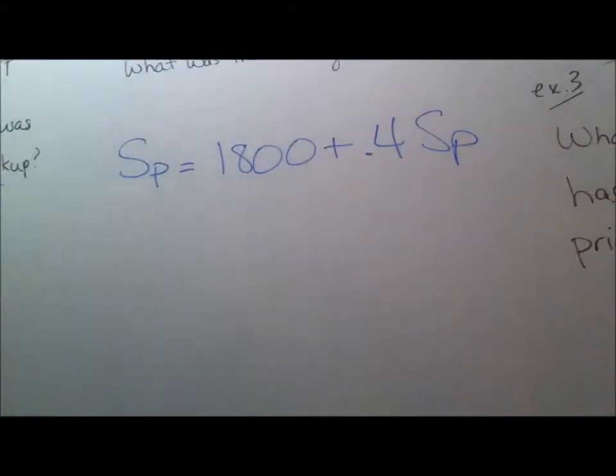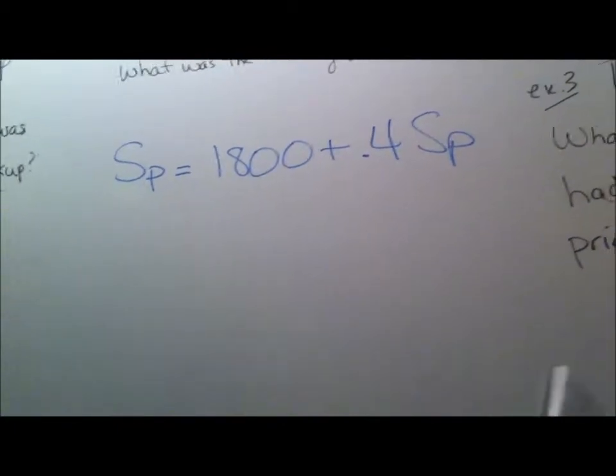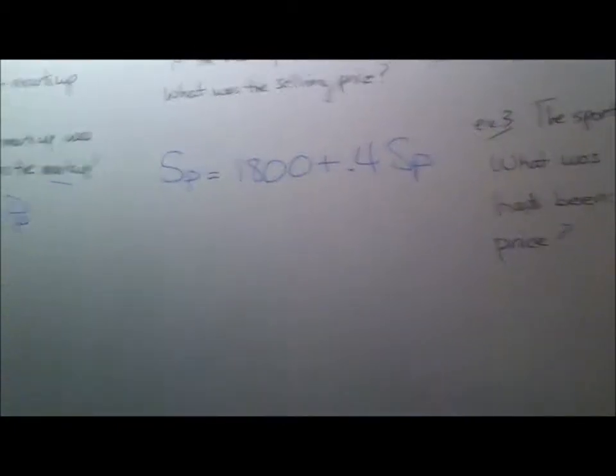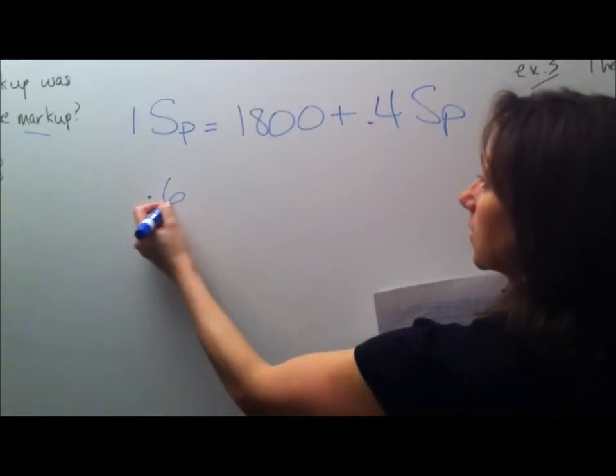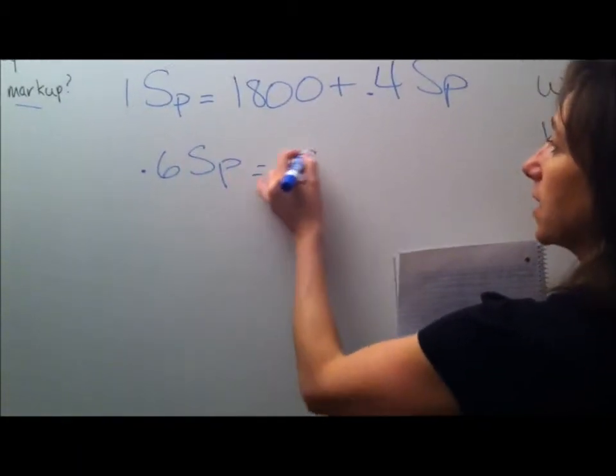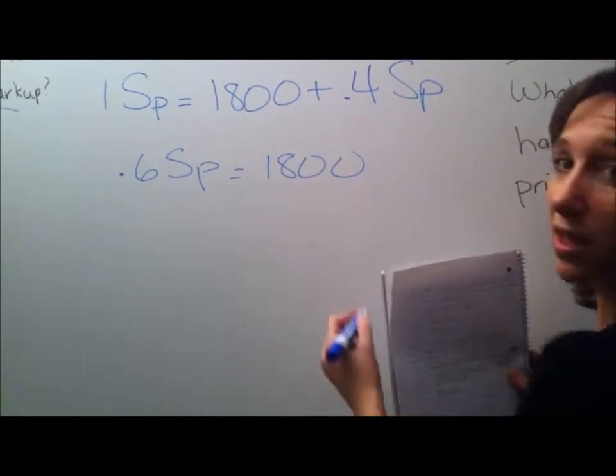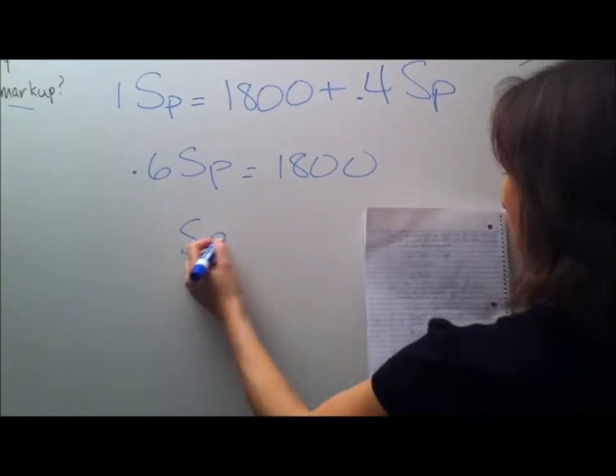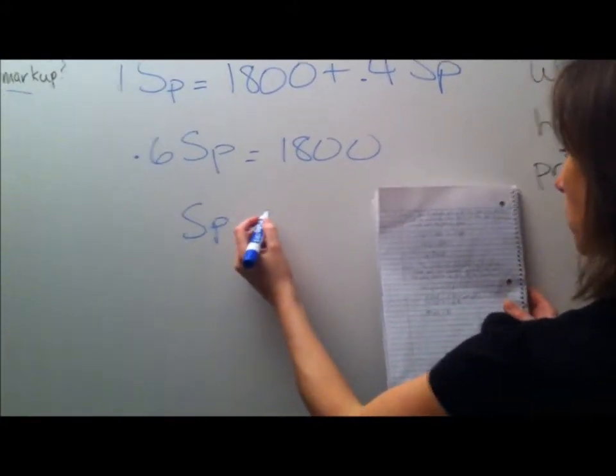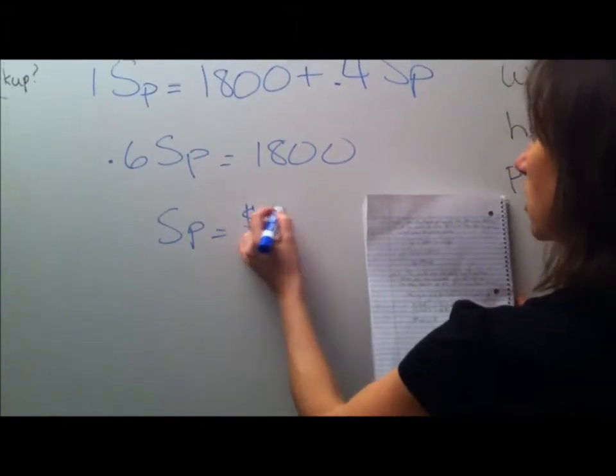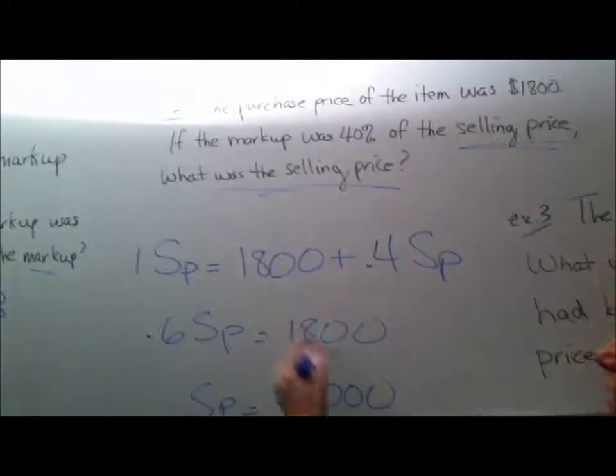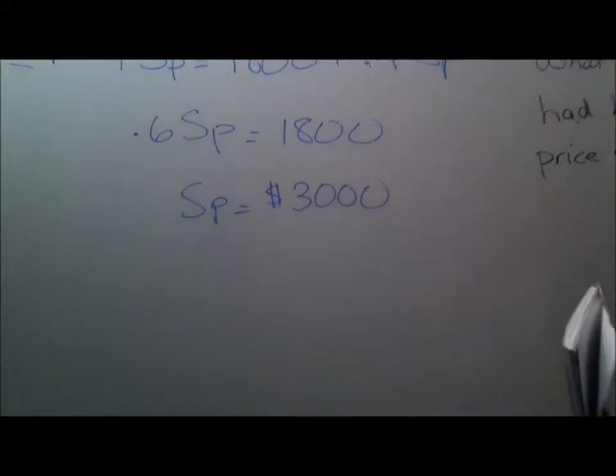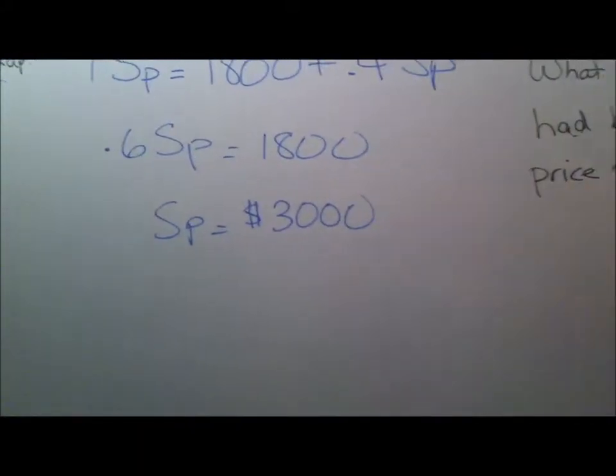And then we just subtract 0.4 from both sides. And we get 0.6. This would be 1. 1 minus 0.4 will be 0.6 of the selling price equals $1,800. Divide both sides by 0.6, and you get the selling price equals $3,000. And that's what they're asking for. What was the selling price? And we got that the first time. Very easy. Just use the formula.